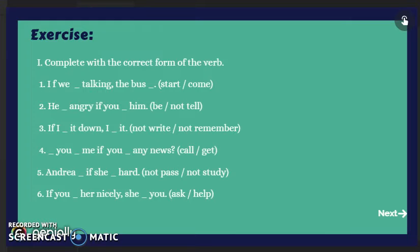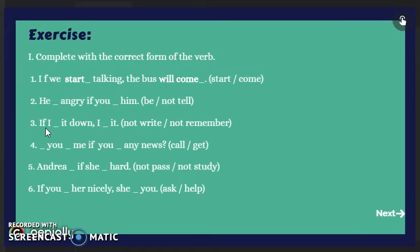Now here we have a short exercise. The instructions say: complete with the correct form of the verb. In the first one, we have: if we talking the boss — we need to use start and come. Start goes in the if clause and come in the result clause. So the answer is: if we start talking, the boss will come. Remember, in the if clause we need the present simple — if we start — and in the result clause, will plus the verb in base form.